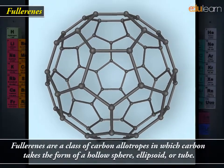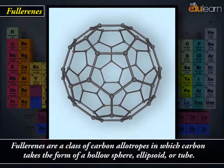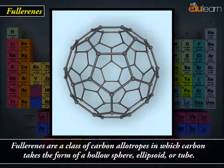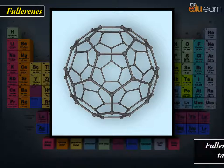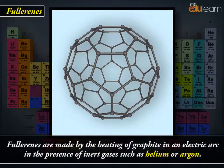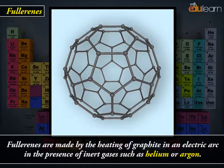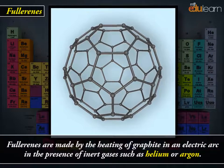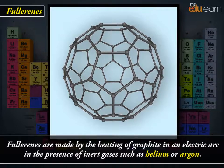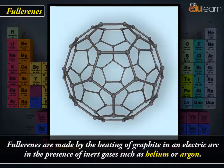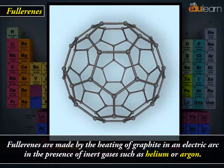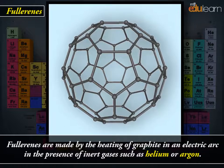Fullerenes are a class of carbon allotropes in which carbon takes the form of a hollow sphere, ellipsoid or tube. Fullerenes are made by the heating of graphite in an electric arc in the presence of inert gases such as helium or argon.